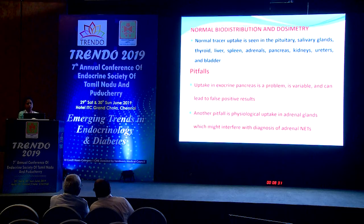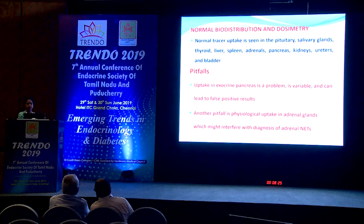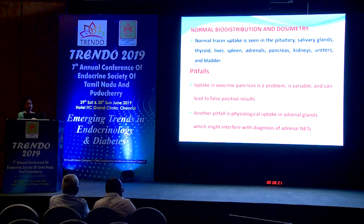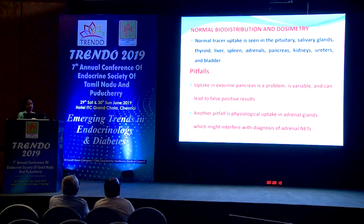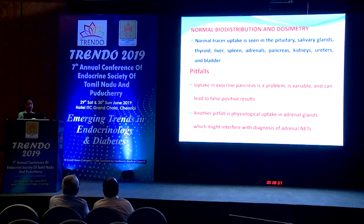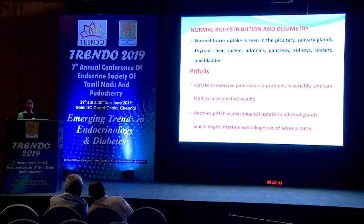Once a Gallium-68 DOTA peptide is injected, normal uptake is seen in the pituitary, salivary glands, thyroid, liver, spleen, adrenals, pancreas, and excretory system. Pitfalls include variable exocrine pancreas uptake leading to false positives, and normal physiological uptake in the sympathetic system and adrenal glands, which may interfere with diagnosis of adrenal neuroendocrine tumors.